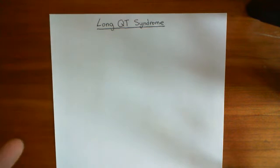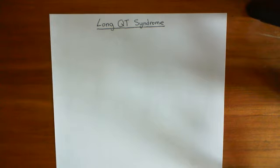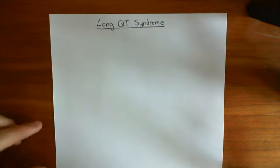Without further ado, this is the plan for this video. We're going to start by looking at the healthy cardiac action potential. We're then going to see how mutations in the channels can cause Long QT Syndrome. And then we're going to see how the complex with A-kinase anchoring protein 9 works, and how mutations in AKAP9 will lead to Long QT Syndrome.